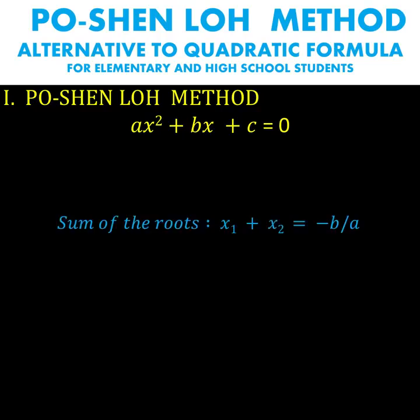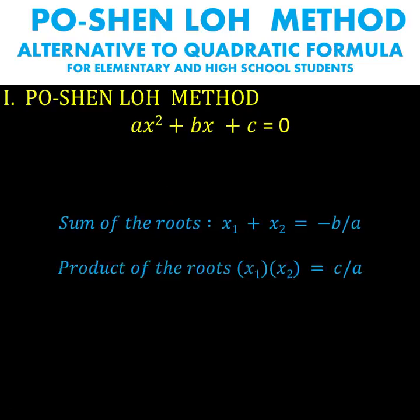First, let's recall that the sum of the roots of a quadratic equation is equal to negative b over a, where b is the coefficient of the x term and a is the leading coefficient, which is the coefficient of the x squared term. Second, the product of the roots x sub 1 times x sub 2 is equal to c over a, where c is the constant term, and x sub 1 and x sub 2 are the two roots of the quadratic equation.